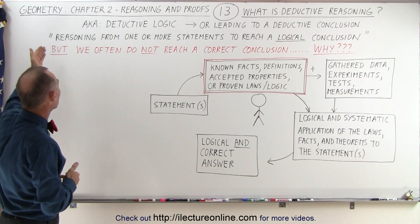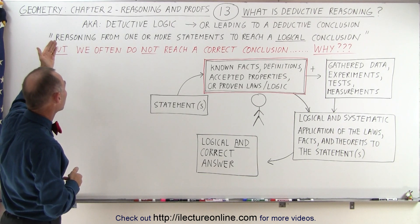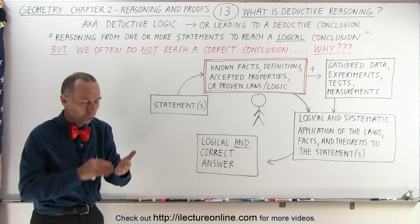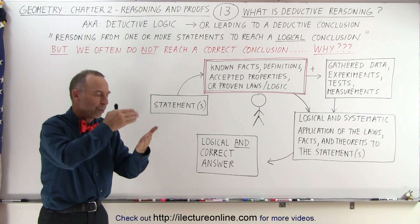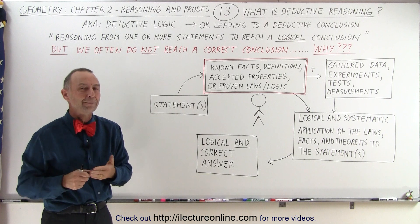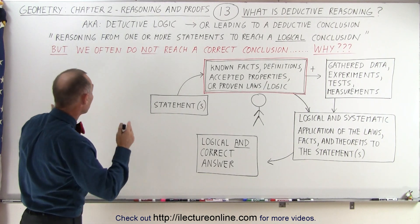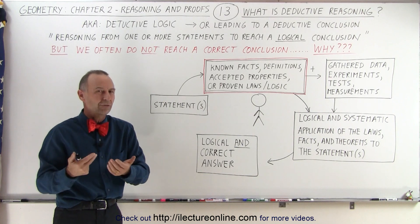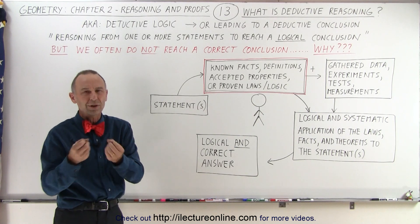Well, one way to explain it is by saying that it's reasoning from one or more statements to reach a logical conclusion. So it's a set of steps where we try to reason our way through that. Now, we still realize that we often do not reach a correct conclusion when we use deductive reasoning. And then the question is why? What are the keys?